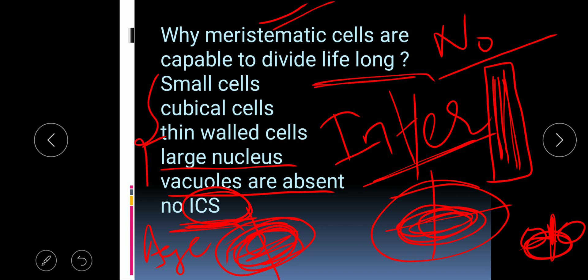These are the basic characteristics of meristematic cells which help them divide lifelong. In reasoning-based questions, you may be asked why meristematic cells are capable of dividing lifelong, or to mention any two characteristic features. This is all for today. In the next class we will start with the types of meristematic tissue. Thank you.